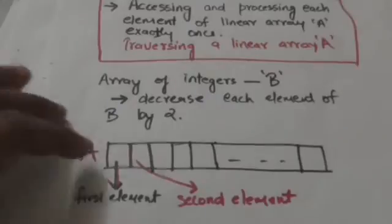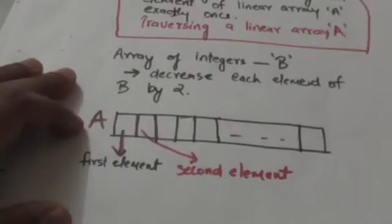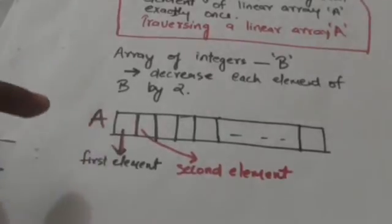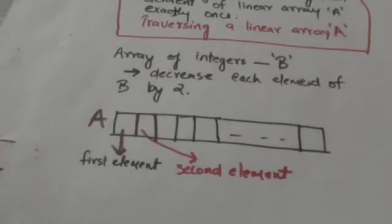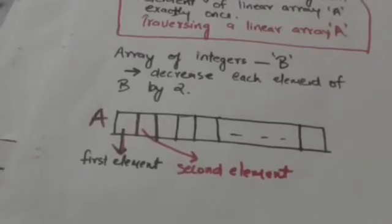To traverse a linear array A, first we will access and process the first element of array A, then we will access and process the second element, then third, then fourth, and so on up to last.